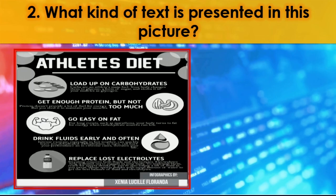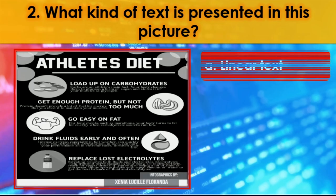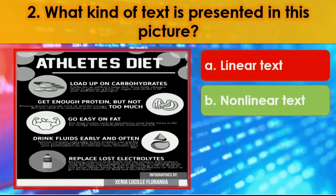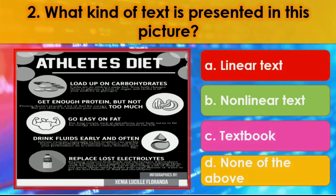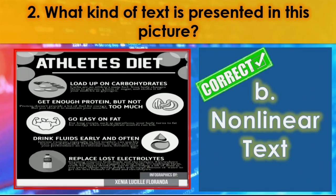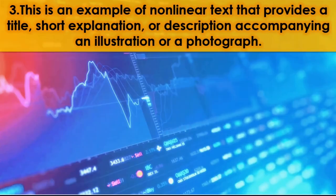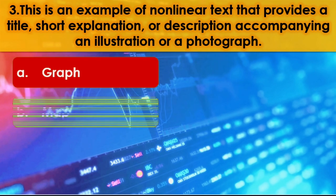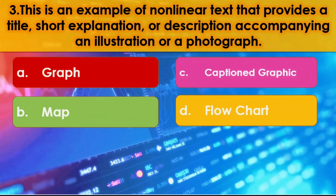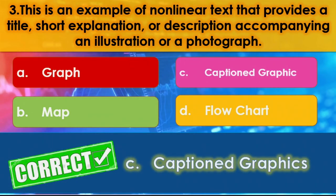Number 3. This is an example of non-linear text that provides a title, short explanation, or description accompanying an illustration or a photograph. A. Graph. B. Map. C. Caption graphic. D. Flowchart. The correct answer is C — caption graphics. Number 4. What appropriate textual aid are you going to use when you want to show the sequence of actions of people or things? A. Bar graph. B. Table. C. Caption graphic. D. Flowchart. The correct answer is letter D — flowchart.